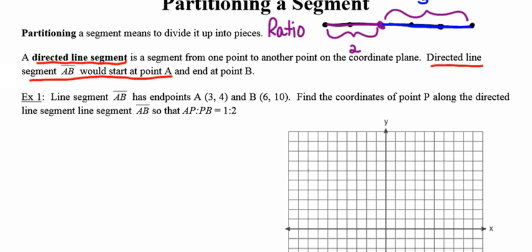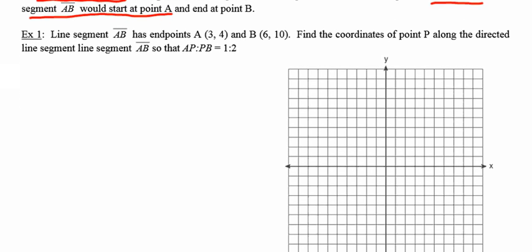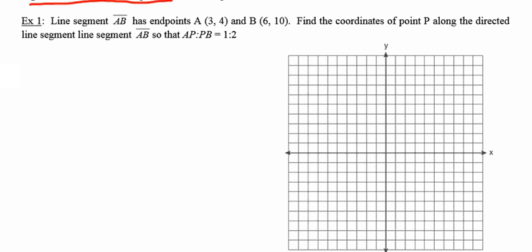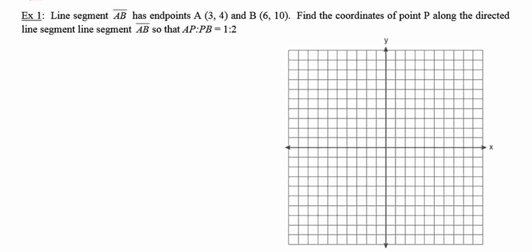Let's jump into some partitioning problems. In number one, line segment AB has endpoints A with coordinates (3, 4) and B with coordinates (6, 10). Find the coordinates of point P along that directed line segment starting at A and ending at B such that the ratio between pieces AP and PB is 1 to 2. I'm going to start by drawing a picture and plotting those points to get a good visual understanding of the question.